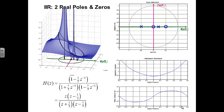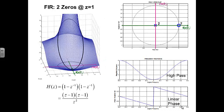As you move around the unit circle, getting closer to a zero makes that numerator vector shorter, so the response gets smaller. Getting closer to a pole makes a denominator vector shorter, which makes the function get bigger. The lengths of these vectors affect the shape of the magnitude response: closer to zeros means it goes down, closer to poles means it goes up. The relative rates at which we approach poles and zeros determine the shape.